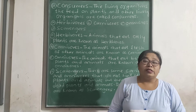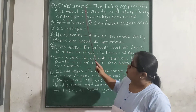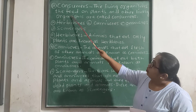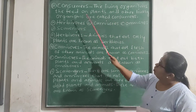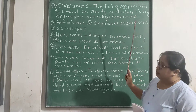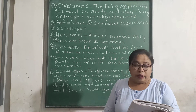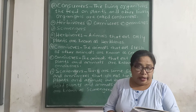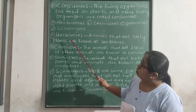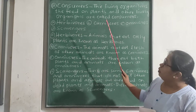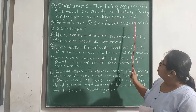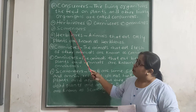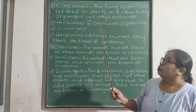Now let us discuss number 2: Consumers. The living organisms that feed on plants and other living organisms are called consumers. They cannot prepare their own food. All animals are consumers and are further classified into the following types: number 1, herbivores; number 2, carnivores; number 3, omnivores; number 4, scavengers.